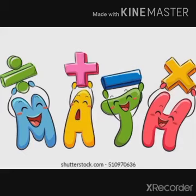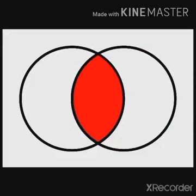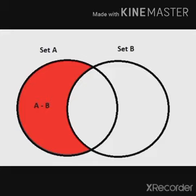What are the set operations? Union — see this picture, this picture shows union of two sets. Next, intersection — see this picture, this picture shows intersection of two sets. Next, complementation — see this picture, this shaded portion shows the complementation. Now see this picture — this shaded portion shows the set difference.